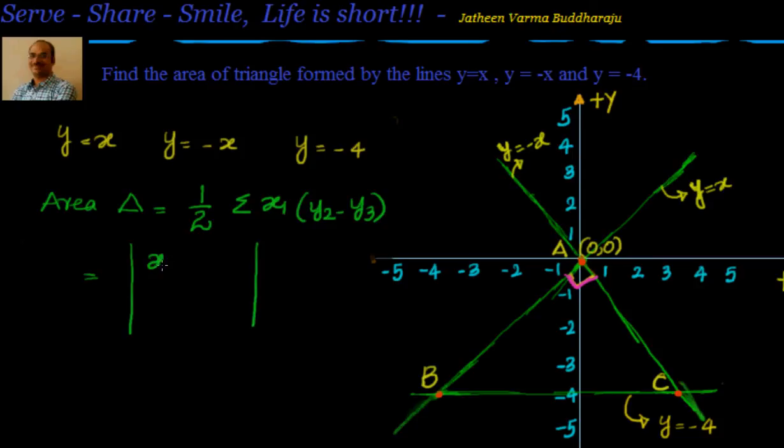You can say x1, y1, 1, then x2, y2, 1, and x3, y3, 1 in the determinant. So it should be y2 minus y3, you can complete the remaining ones.